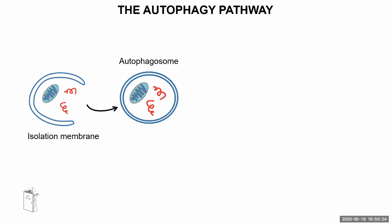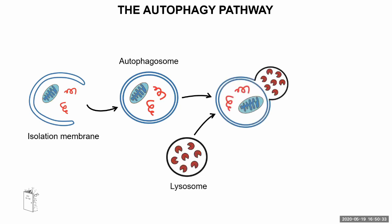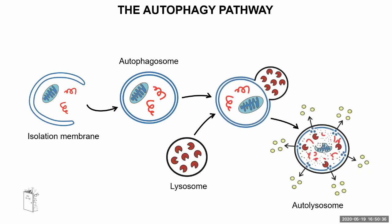In the later stages of autophagy, the autophagosome will fuse with the lysosome, thus forming the final structure called the autolysosome. In this final structure, the real degradation happens via the lysosomal enzymes, and all the small building blocks that are reconstructed are released back to the cell for the cell to reuse.